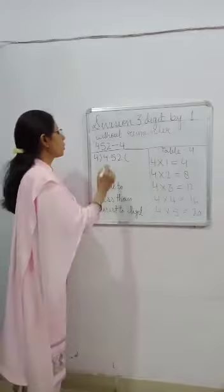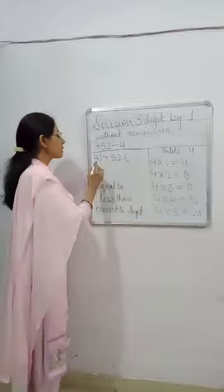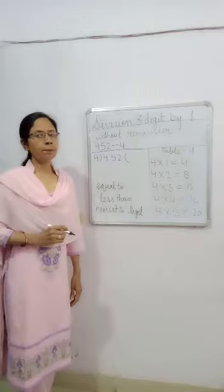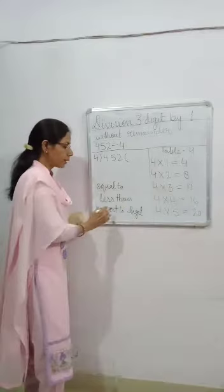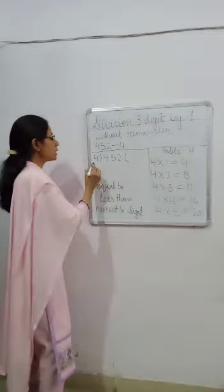We got 452 divided by 4. As the divisor is 4, we use the table of 4 to find the product which is equal to, less than, or nearest to digit of dividend.